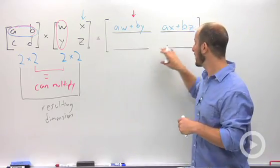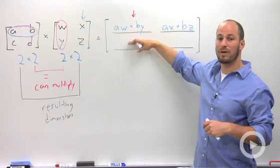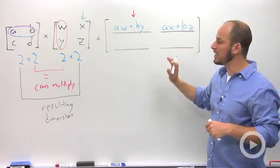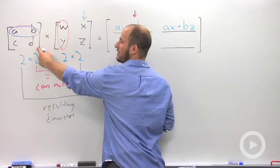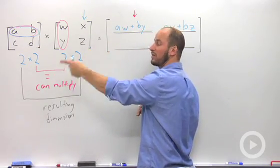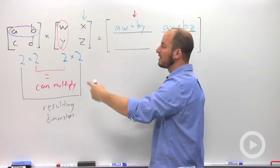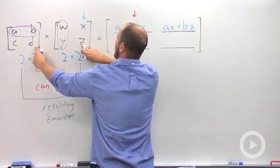So say we want to jump forward and look at this entry right here. It's in the second row, second column. So we need to go to our matrices and our second row, second column. Again, the first matrix determines the row, the second one determines the column. So then we just go down the way, cx plus dz.